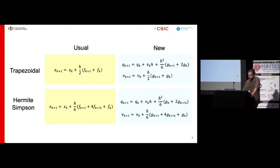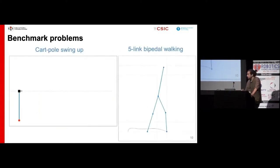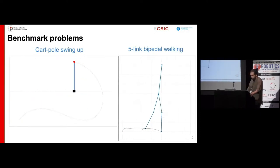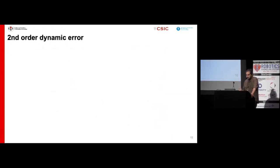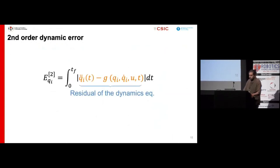To see how the new schemes compare to the usual ones in practice, we apply them to two benchmark problems from the literature, the cart pole swing up and the five-linked bipedal walking problem. To measure the quality of the obtained solutions, we compute the second-order dynamic error, which is the integral of the residual of the dynamics equation.